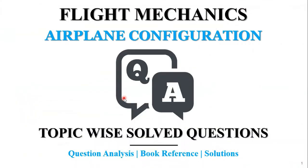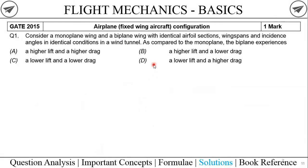Here is a past question — a one-mark question from GATE 2015. Reading out the question: 'Consider a monoplane wing and a biplane wing with identical airfoil sections, wingspans, and incidence angles in identical conditions in a wind tunnel. As compared to the monoplane, the biplane experiences...'